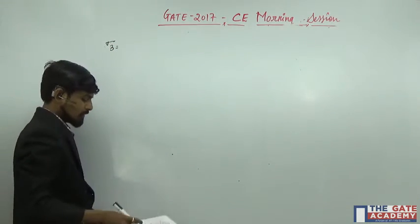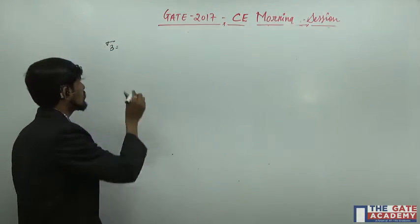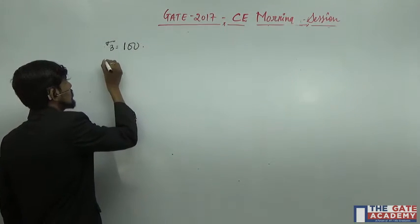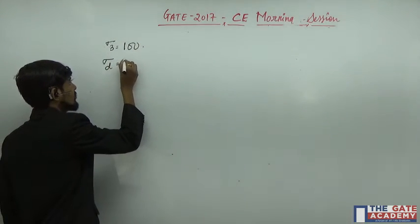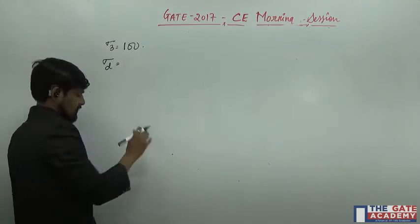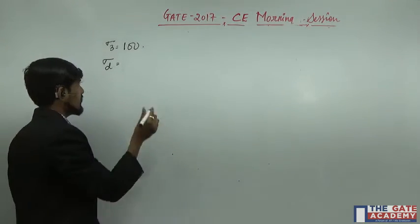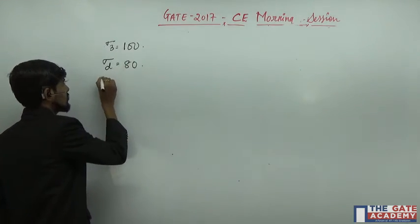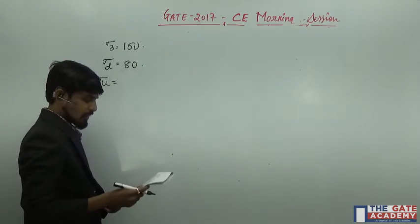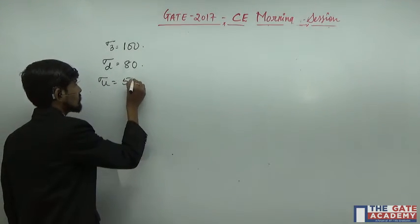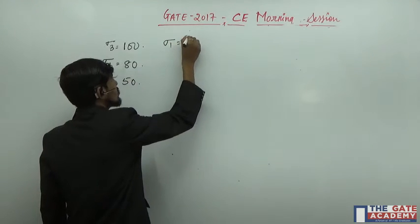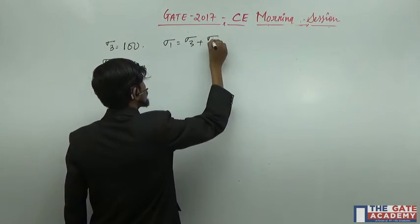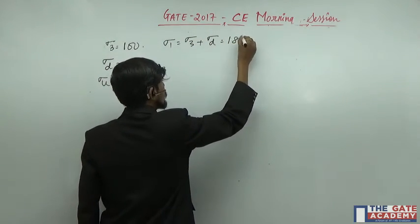Sigma 3 is given, sigma 3 is equal to 100. Sigma d is given as 80. Pore water pressure is given as 50. So sigma 1 is equal to sigma 3 plus sigma d, that is equal to 180.